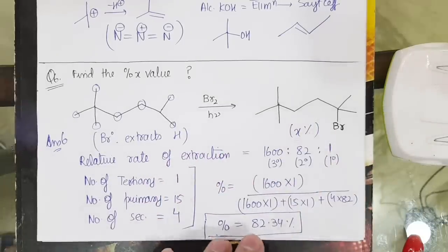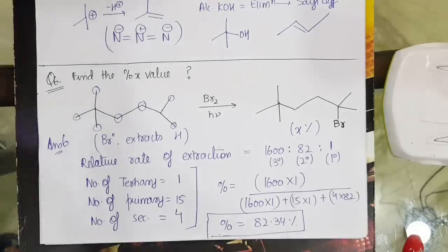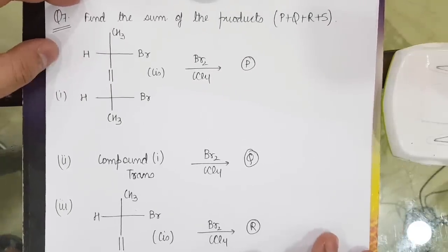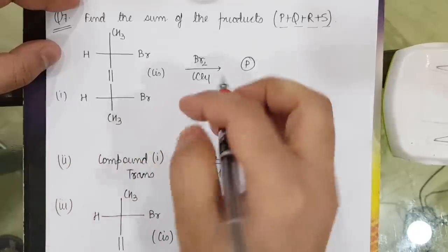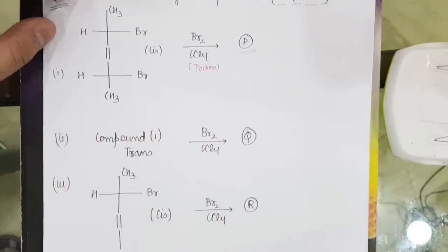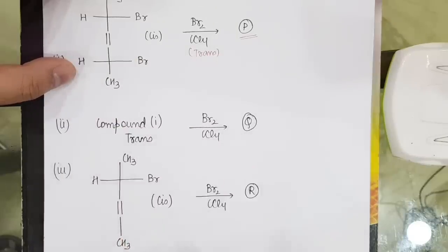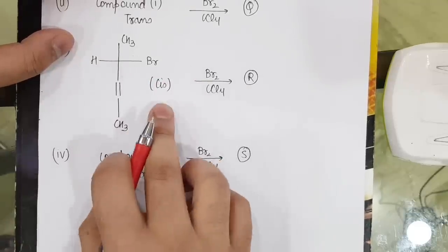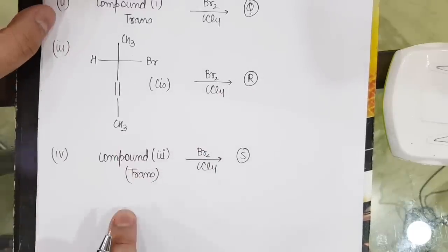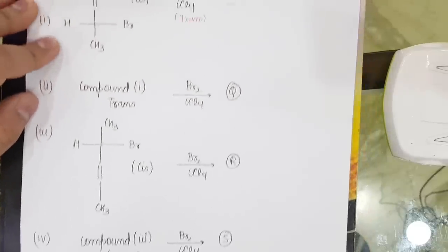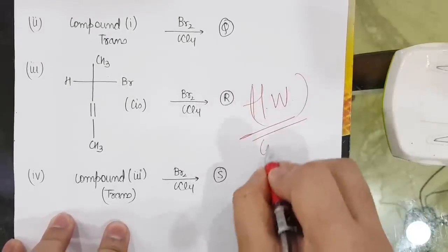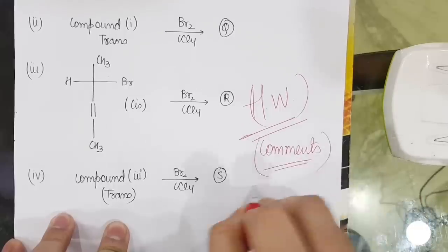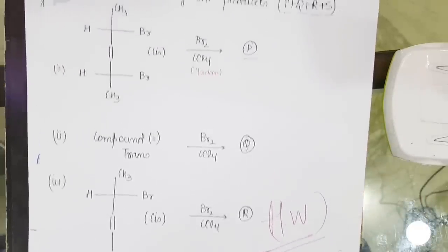So the compound formed at the tertiary carbon will be the major compound with a percentage of 82.34%. Now the last question is a homework question — find the sum of products P + Q + R + S. Compound 1 with cis addition gives P products, compound 1 with trans addition gives Q, a new compound with cis version gives R, and compound 3 with trans version gives S. Mention the answer in the comments section. Thank you and all the best!